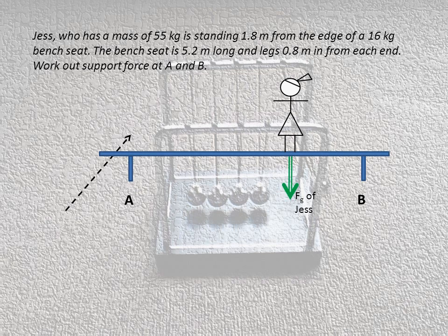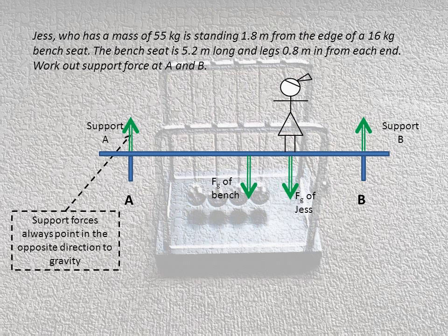Let me just put in some of the force vectors here. Here's the first force, force of gravity on Jess, straight down from where she is. Here's the force of gravity for the bench and the two support forces. Notice the support force always points in the opposite direction of gravity for these types of questions, and they should be directly above where the supports are.